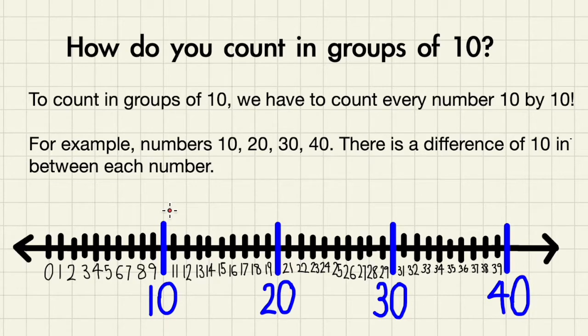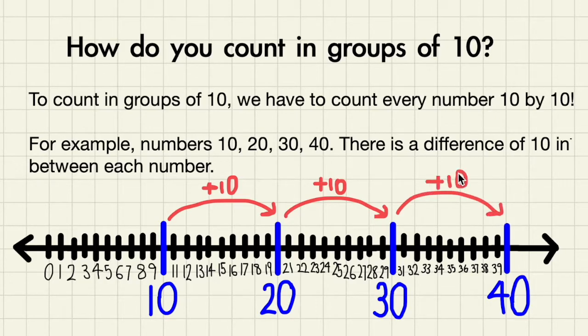For example, 10, 20, 30, 40. There's a difference of 10 in between every number. 10 plus 10 is 20, 20 plus 10 is 30, and 30 plus 10 is 40.